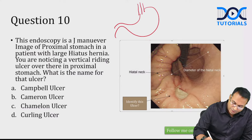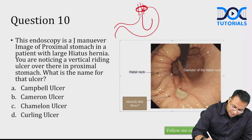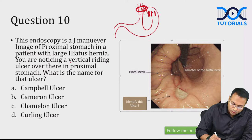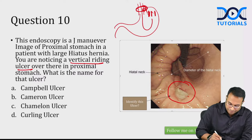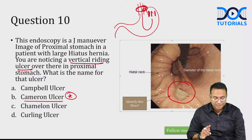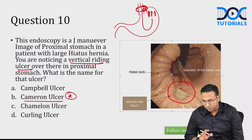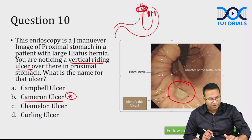On endoscopy J-maneuver, the hiatus is loose — hiatal hernia is seen — and there is a vertical riding ulcer over the proximal stomach. This is known as Cameron ulcer. Cameron ulcers are vertical riding ulcers seen at the hiatal hernia site.